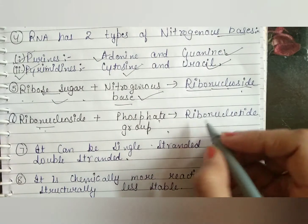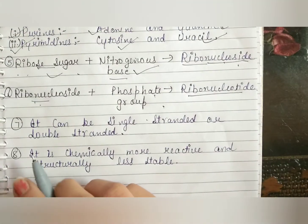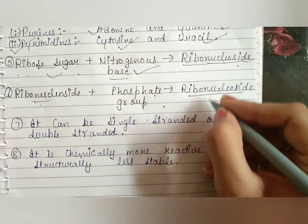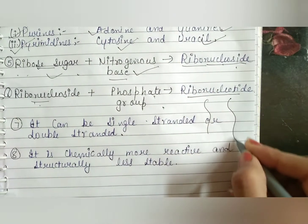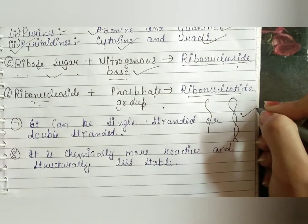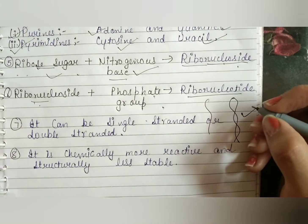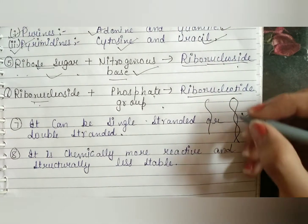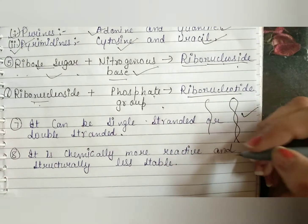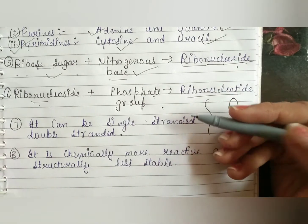RNA can be single stranded or double stranded. DNA is always double stranded, but that is not the case with RNA — it can be single stranded or it can be double stranded.